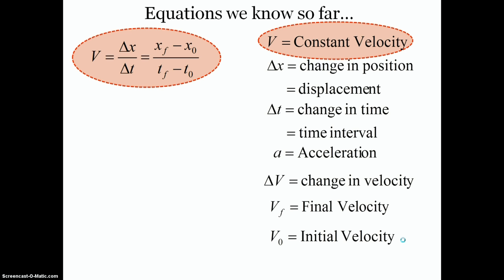Let's look at the equations we know so far. From our first unit, our constant velocity unit, we had one equation: velocity equals displacement over time, where displacement is the change in position (final minus initial) divided by the change in time (final time minus initial time). We must remember this equation only applies if velocity doesn't change — it stays constant.